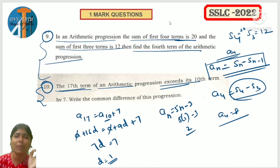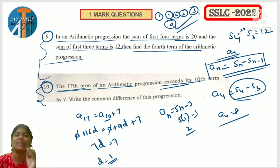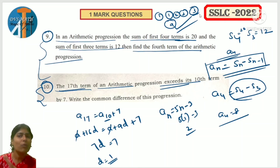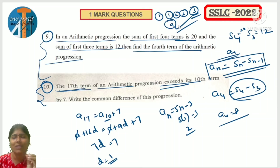Maximum marks from AP lesson: 1 MCQ for 1 mark, one 2-mark question, one 3-mark question - total 9 marks from AP. As per model paper and preparatory paper, 4 marks is also possible. So around 9 to 10 marks from AP. Clear? For 3 marks and 4 marks questions, same type of questions apply.